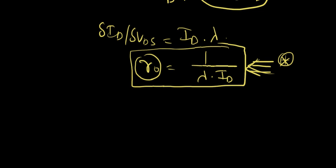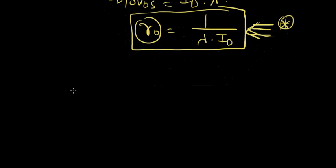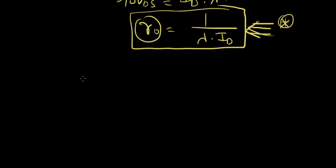That's the output resistance. Let me change the color. That's the output resistance. So we finally have a small signal model that has taken into account the channel length modulation.